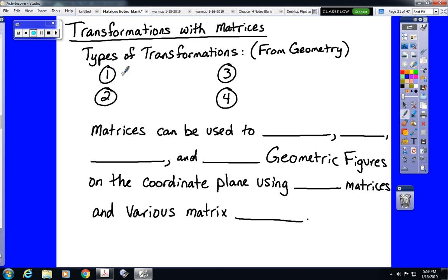There are four types of transformations from geometry. We have reflections, or flips, whichever way you learned about it in school. Translations, more commonly known as slides. We have rotations, occasionally taught as turns. And we have dilations.